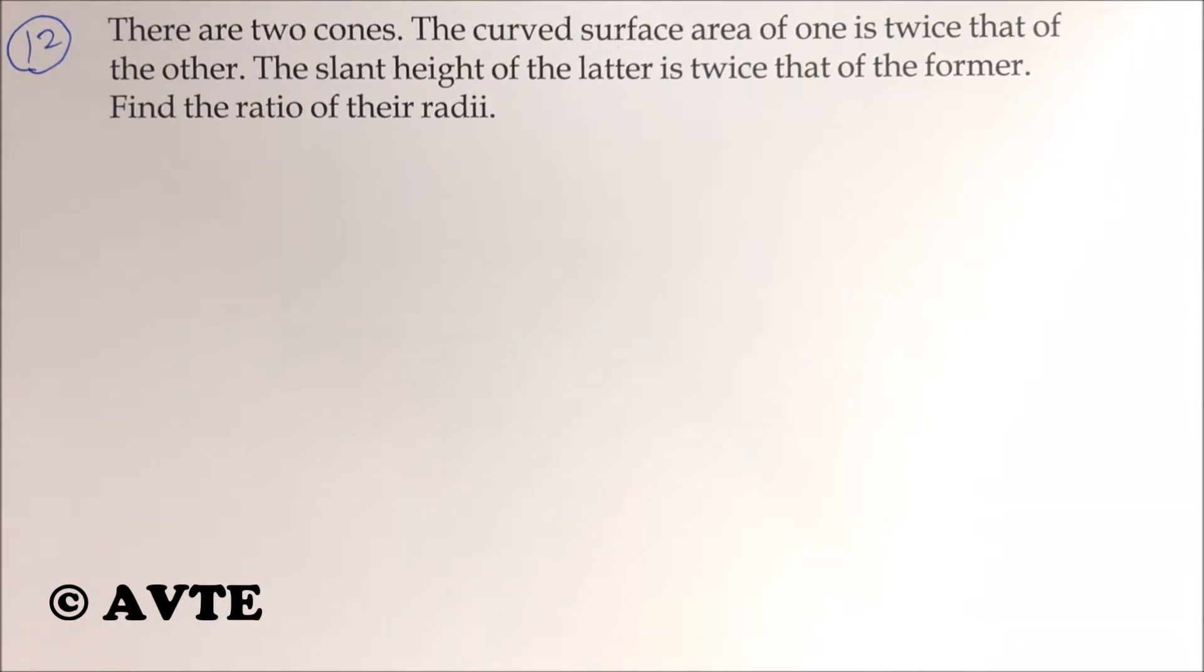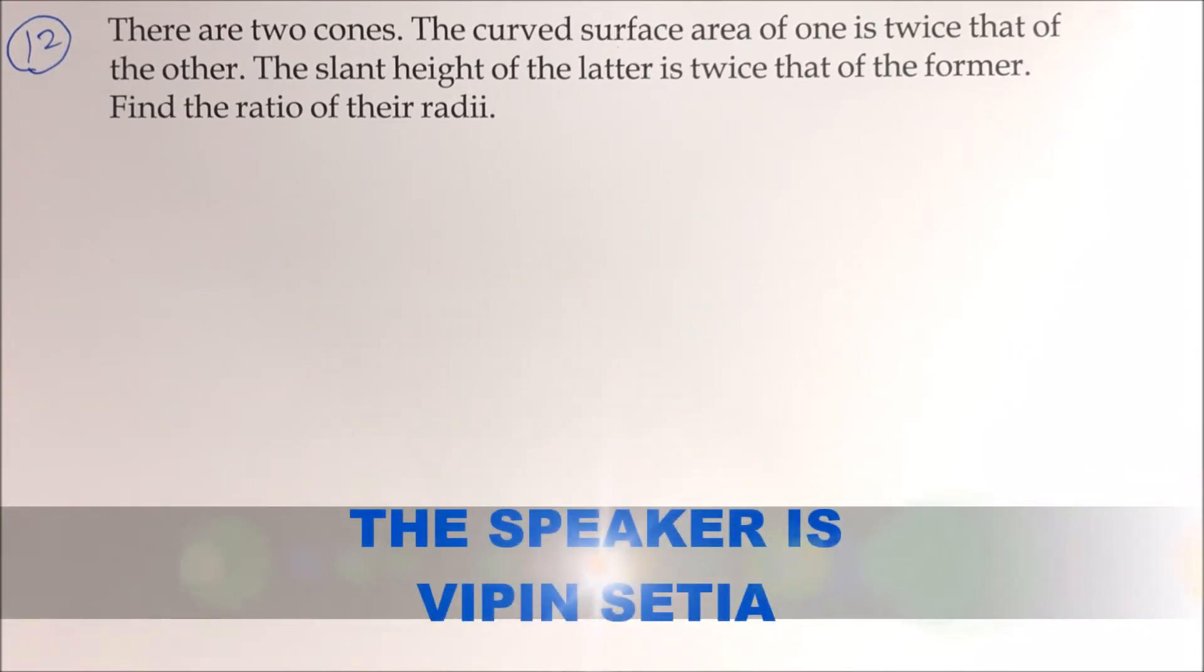This is question number 12. There are two cones, the CSA of the first cone is twice the CSA of the second one and the slant height of the latter is twice that of former. It means slant height of the second cone is twice the slant height of the first cone and you have to find the radii.